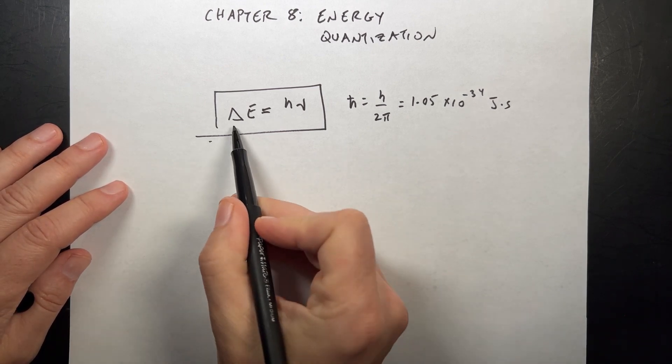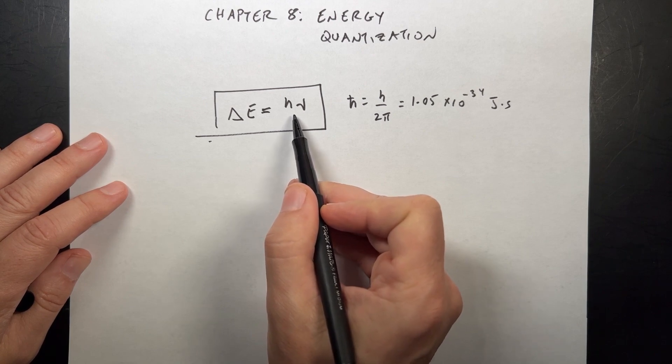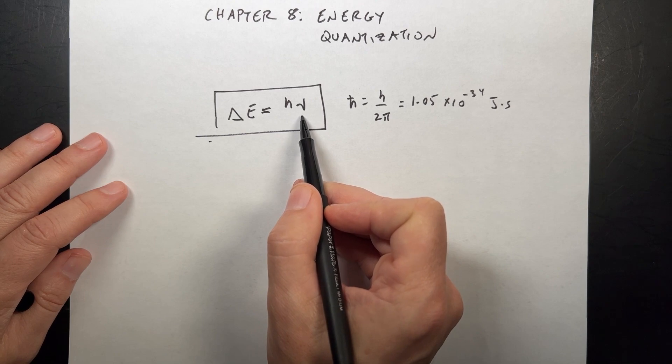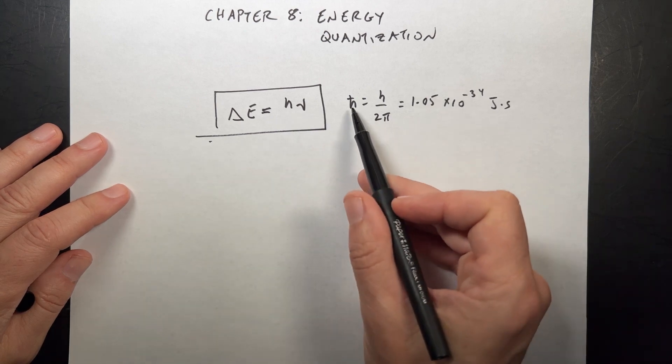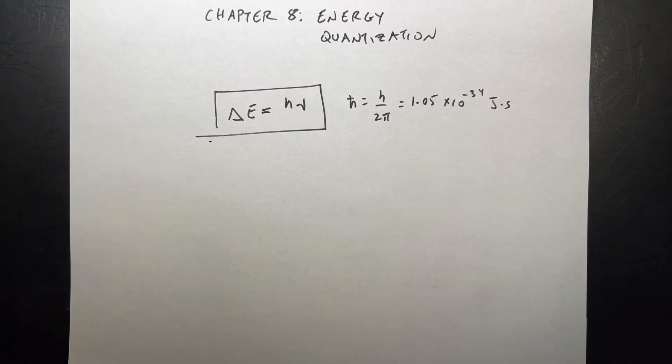So the change in energy for a quantum system is equal to, in order to get the energy to change, you need to perturb it with some frequency nu. We usually use nu because I don't know why. And this is Planck's constant, h. A lot of times we'll have h-bar, which is Planck's constant over 2 pi, but there you have it. So that's the main thing.